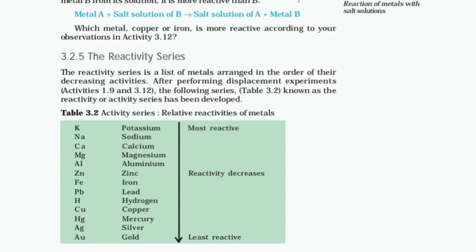The Reactivity Series is a list of metals arranged in the order of their decreasing reactivity. After performing displacement experiments (Activities 1.9 and 3.12), the Reactivity or Activity Series (Table 3.2) has been developed. The elements are arranged from most to least reactive: potassium, sodium, calcium, magnesium, aluminium, zinc, iron, lead, copper, mercury, silver, and gold.